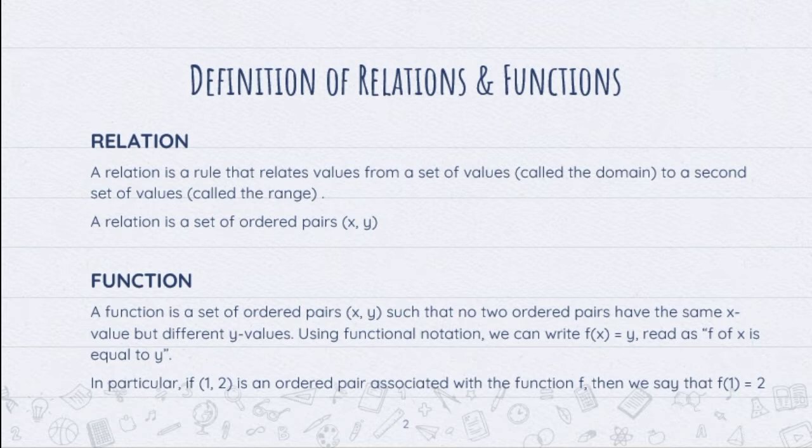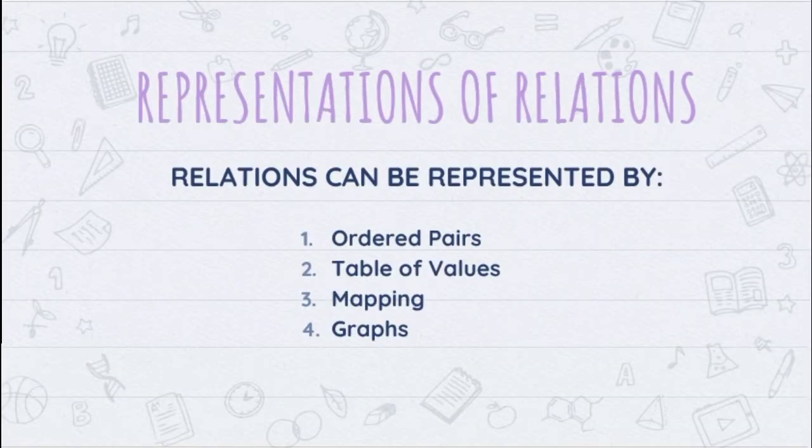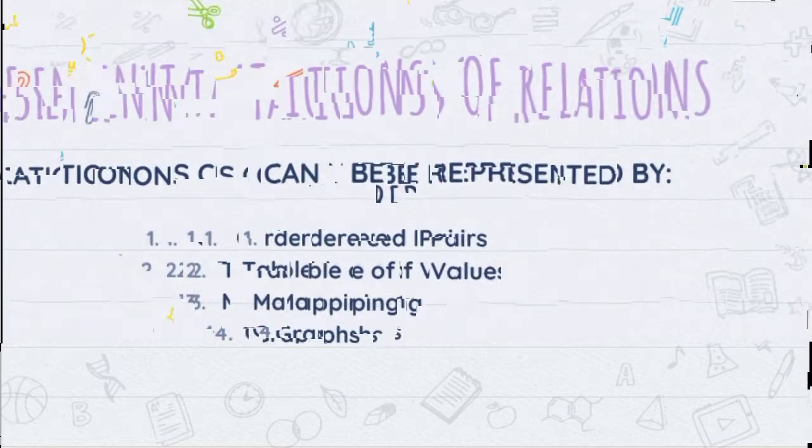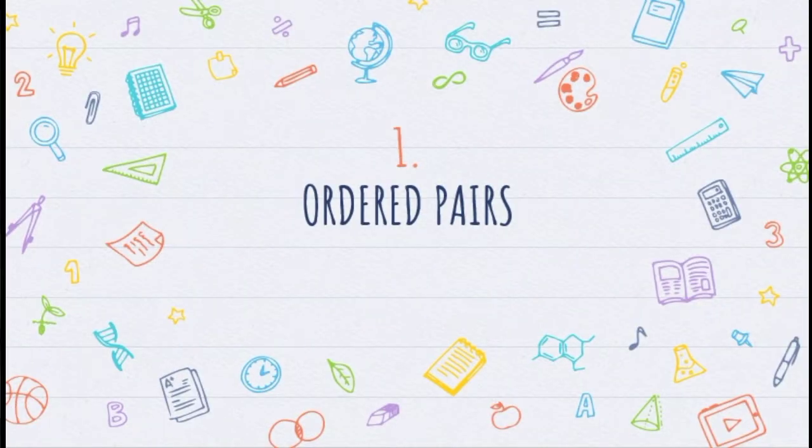Looking at the definition, both are a set of ordered pairs (x, y). Therefore, we can say that a function is a special type of relation. All functions are relations, but not all relations are functions. Relations can be represented by ordered pairs, table of values, mapping, and graphs. Let us start with ordered pairs.